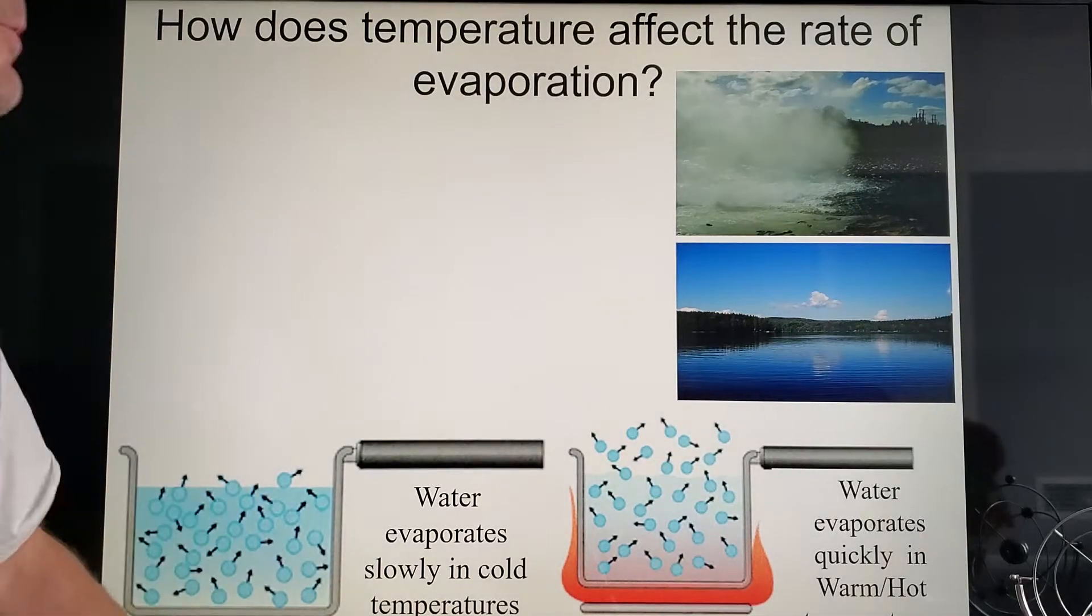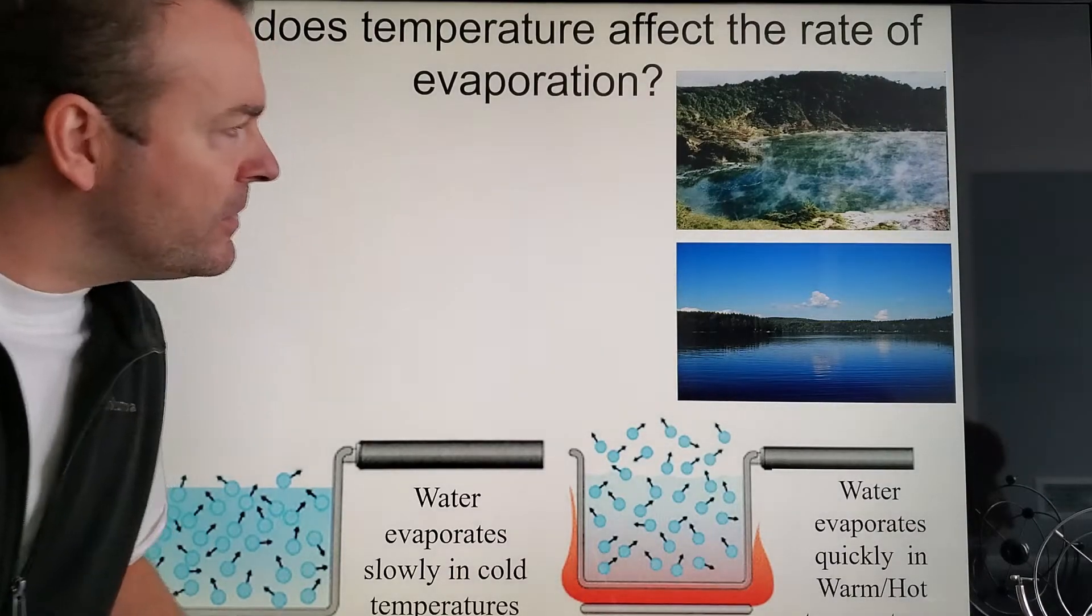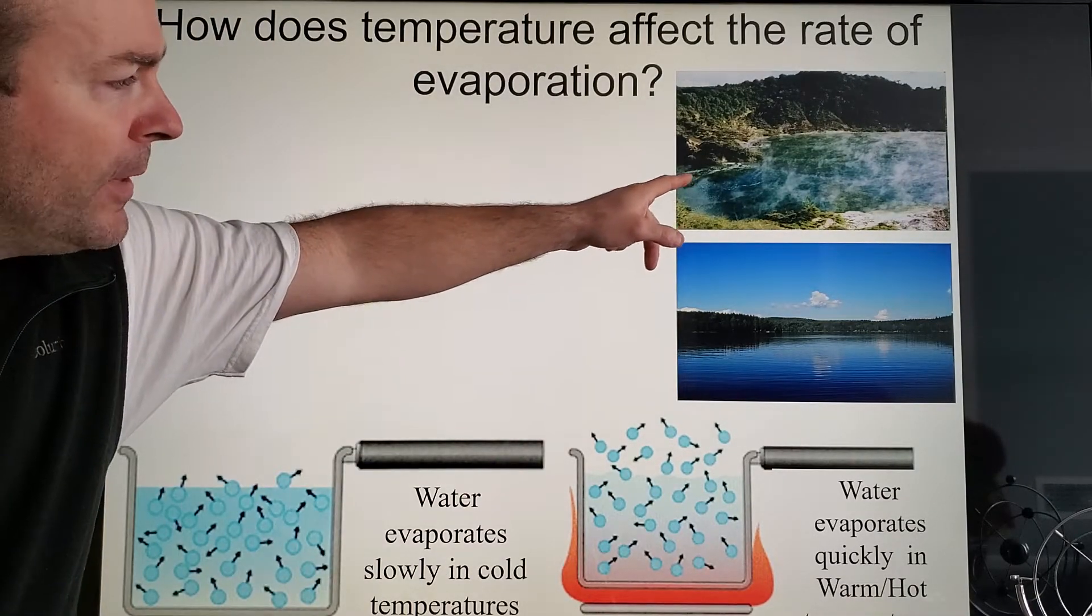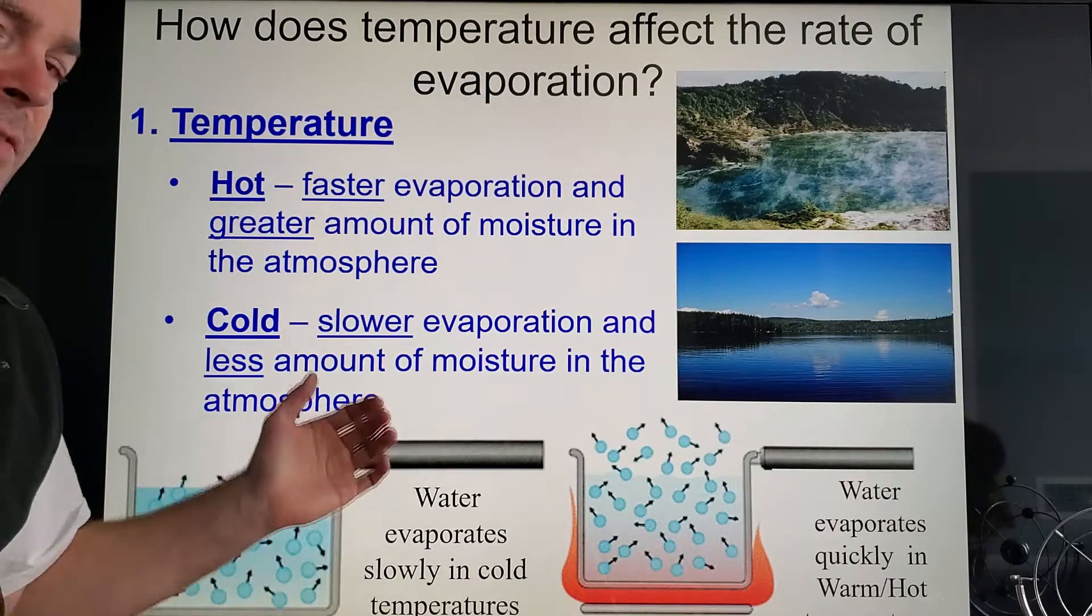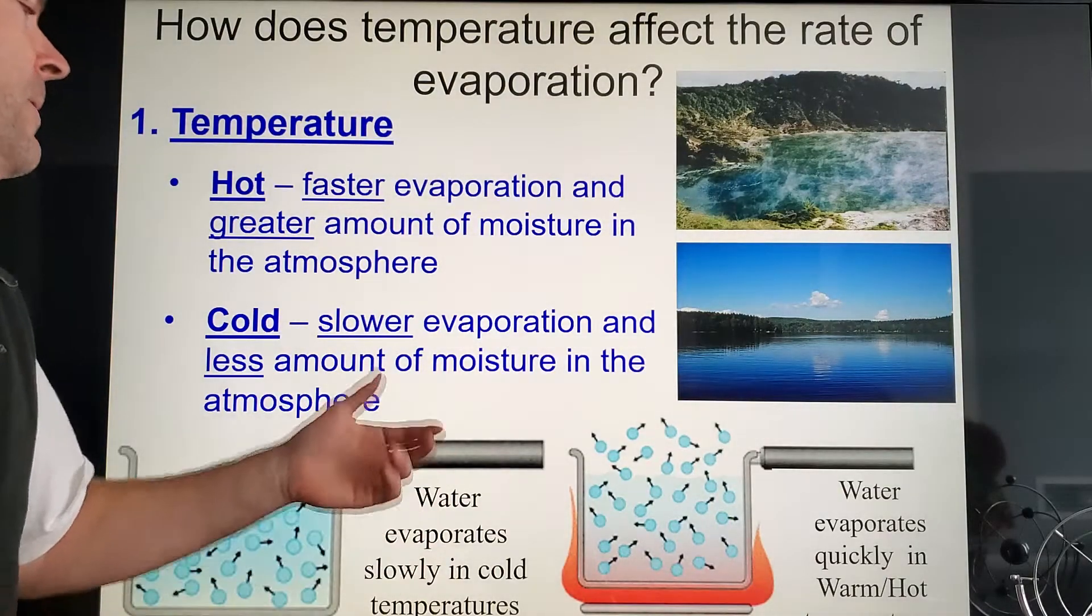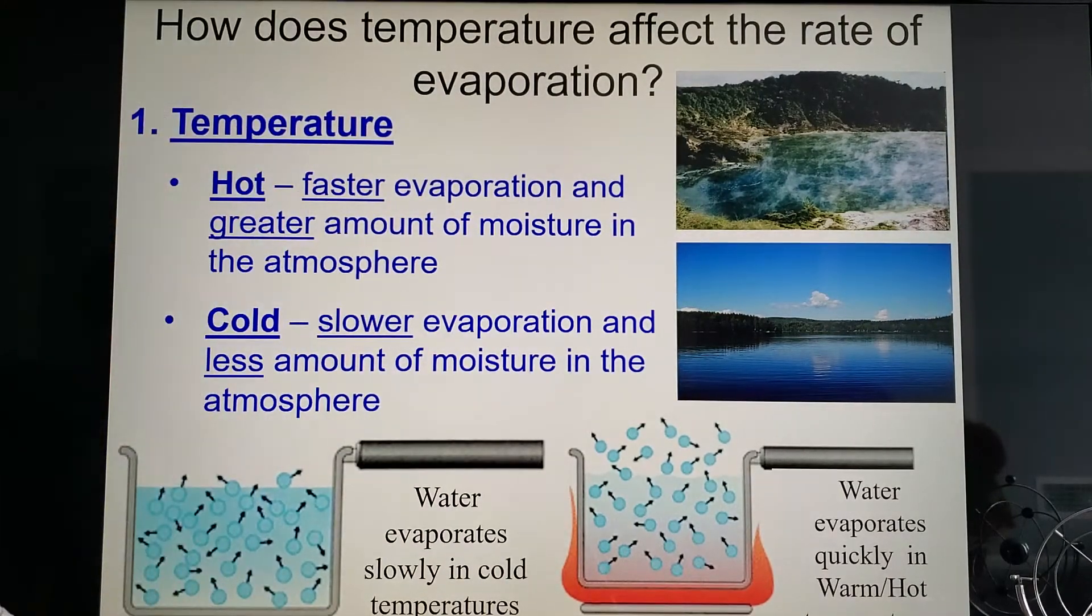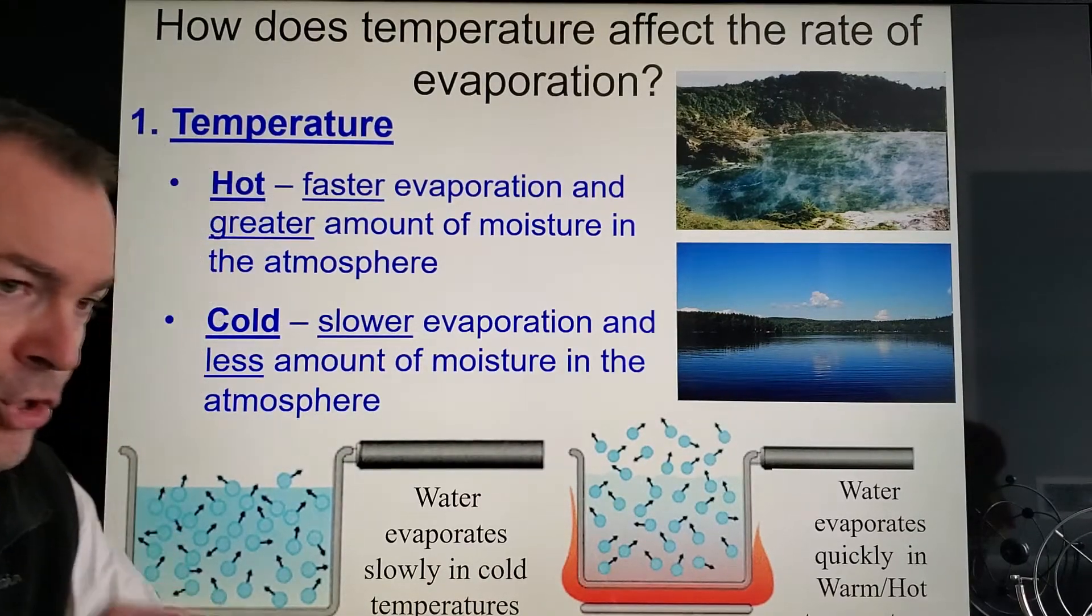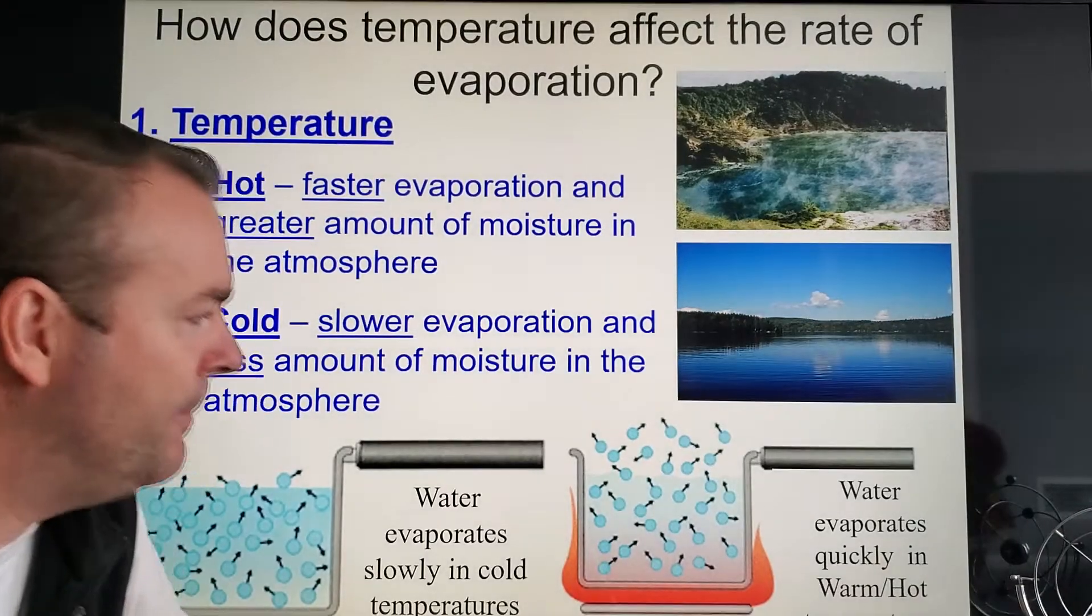So we'll go through the factors that affect evaporation. The first one of course is temperature. You can see a little steam forming over the lake there on a nice sunny day. Well, bottom line is of course the hotter it is outside, the faster evaporation is going to occur. Conversely, the colder it is, the slower it's going to occur. Now there are other factors involved, but if we're just talking temperature, then yes, higher temperatures will have faster evaporation rates.